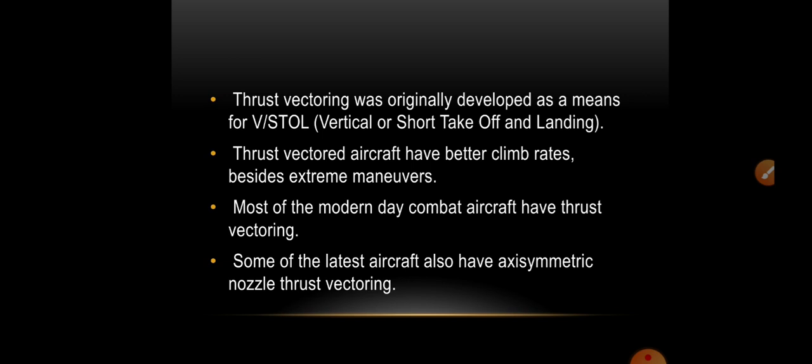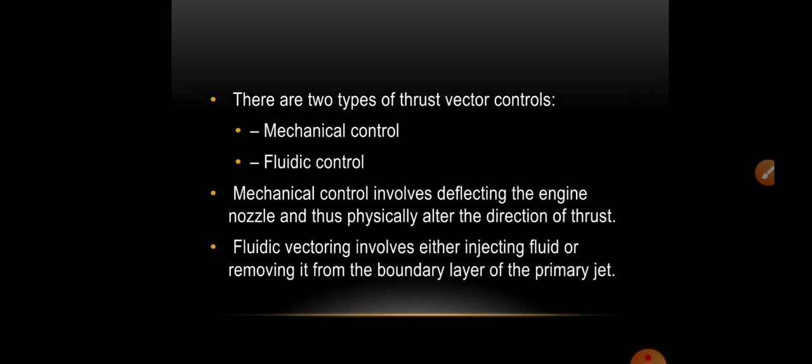Some of the latest aircraft also have axis-symmetrical nozzle thrust vectoring. There are two types of thrust vector controls: mechanical control and fluidic control. Mechanical control involves deflecting the engine nozzle and thus physically altering the direction of thrust. Fluidic vectoring involves either injecting fluid or removing it from the boundary layer of the primary jet.